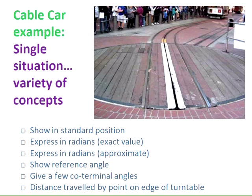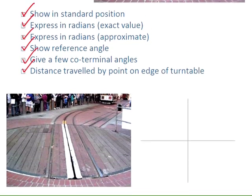All right, we're going to use this situation involving the San Francisco street car to look at a variety of concepts here to do with trigonometry. We are going to show this angle in standard position, write it in radians as an exact value, write it in radians as an approximate decimal value, look at its reference angle, find a few coterminal angles, and look at the distance a point on the outside travels around. So let's look at the first of those, showing it in standard position.